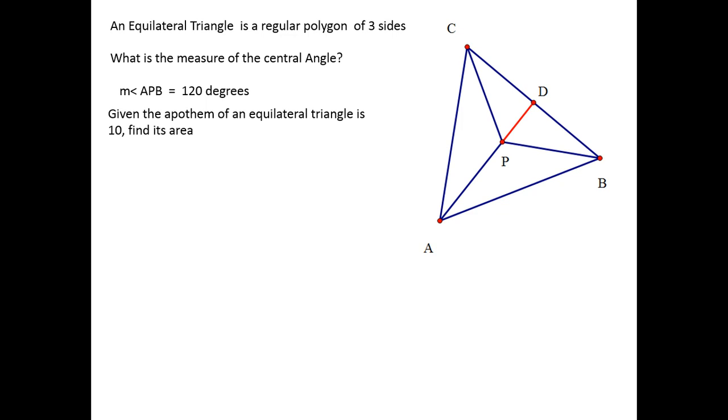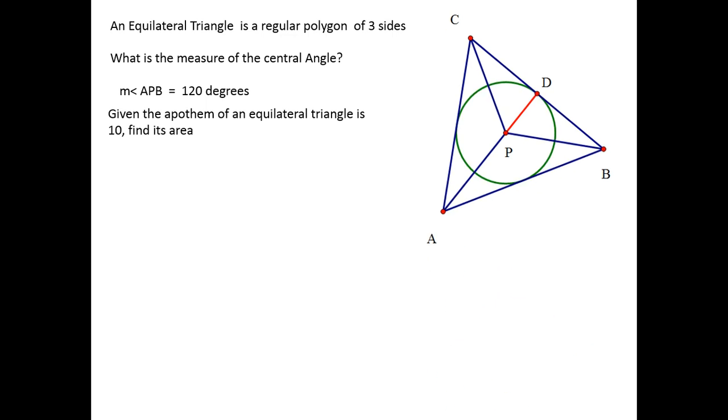Given the apothem of the equilateral triangle is 10, find its area. There is the apothem, which is the segment PD. Segment PD is the apothem. The polygon has formula one-half apothem times perimeter. I don't have perimeter, but we have a special right triangle coming our way.